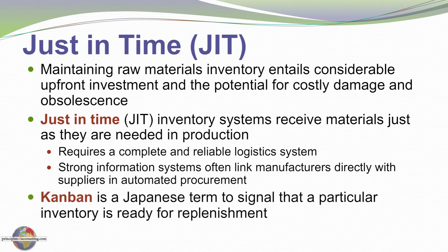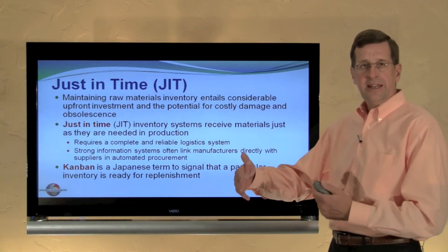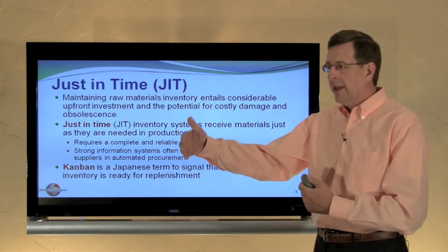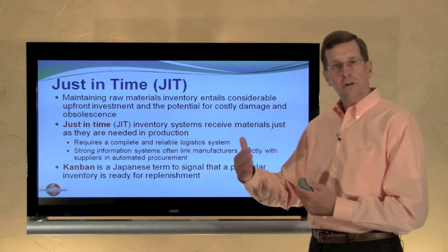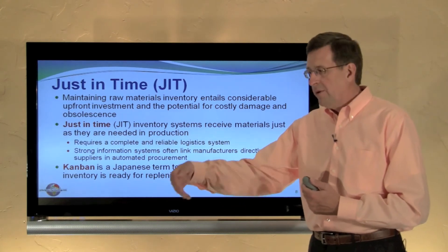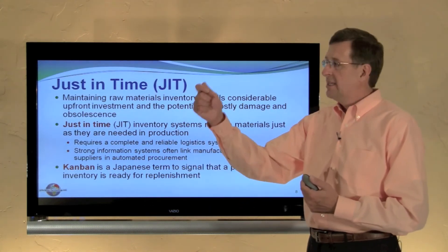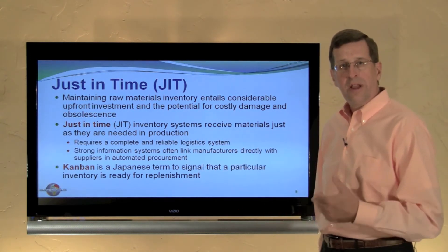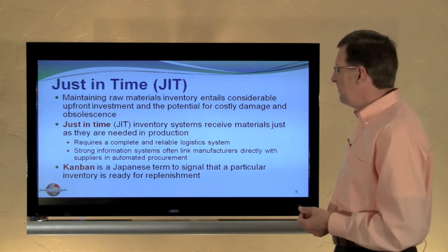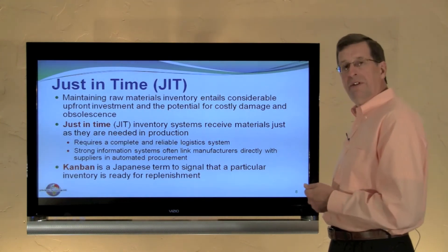Kanban is a Japanese term to signal that a particular inventory item is ready for replenishment. It could be as simple as having a basket with a hundred items of inventory, and when you reach ten in stock you want to place another order. When you reach for the tenth item, a tag is already in the bin that says we need to order — go ahead and get the order system going. You'd probably do that electronically, but it's basically the signal for replenishment of inventory.